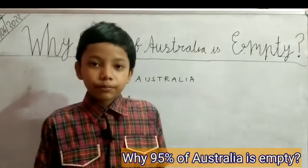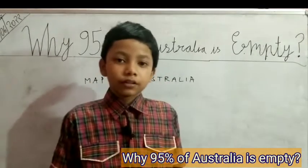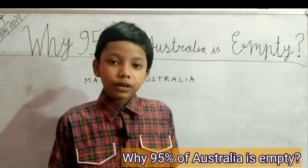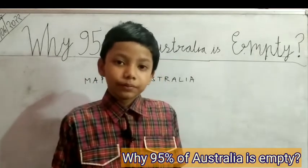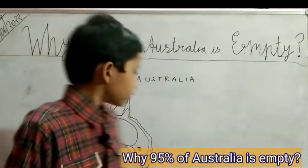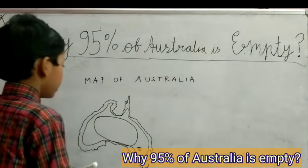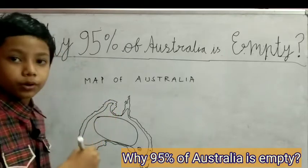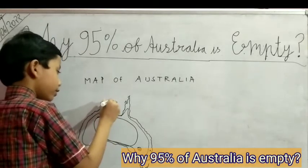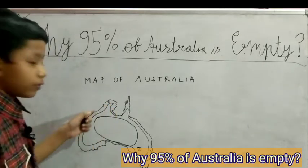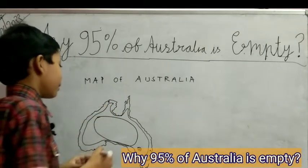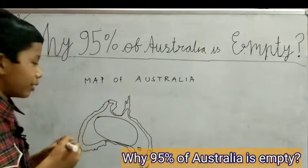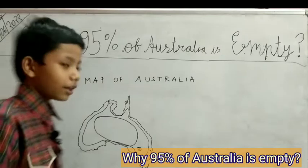That's why you see many Australian cities on the coastal areas, not in the middle part of Australia. Also, the closest city from the middle part is Darwin, which is right here in Australia. It is so far away that nobody knows that the middle part of Australia is actually a desert.